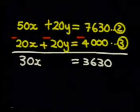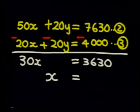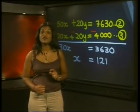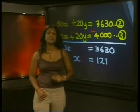So to solve for X, we need to divide both sides by 30 and I get X is equal to 121. Remember, X was the number of 50 Rand notes. So we have 121, 50 Rand notes.